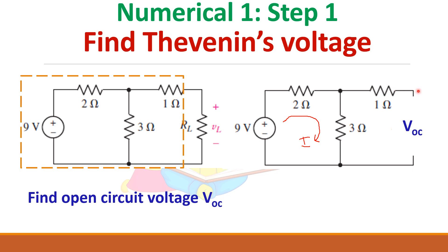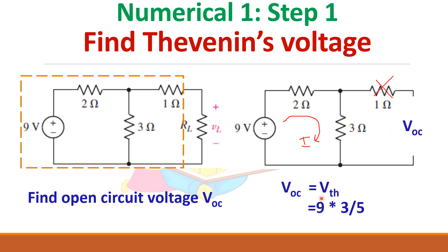Since this end is open, no current will flow through the 1 ohm resistor. Current flows only through the 2 ohms and 3 ohms, because current will only flow when there is a closed path. So find what is VOC — it is the voltage across the 3 ohm resistor. 9 volts is across this one, so applying the voltage division formula: total voltage 9 volts multiplied by 3 ohms divided by total resistance 3 plus 2 equals 5 — giving 5.4 volts across 3 ohms. So Vth is 5.4 volts.